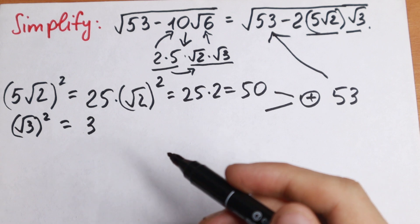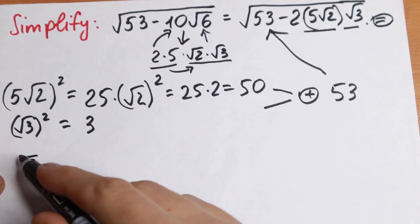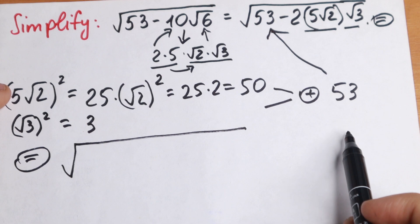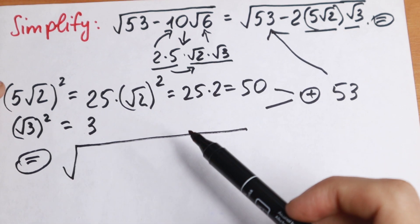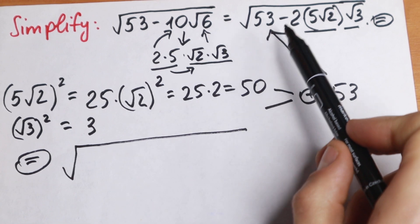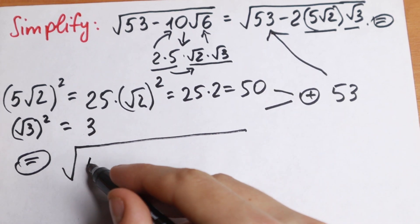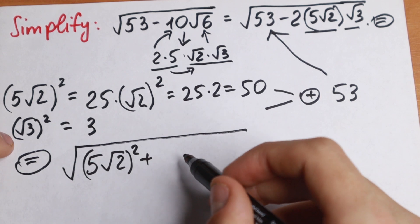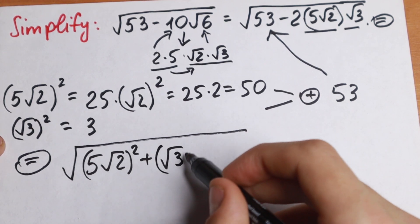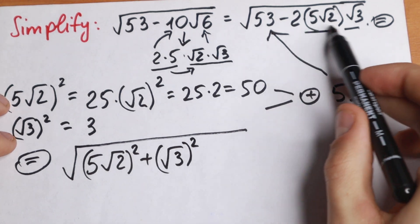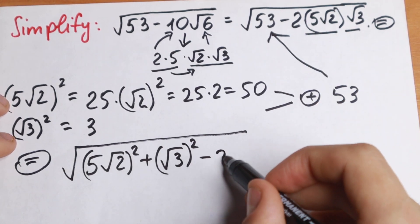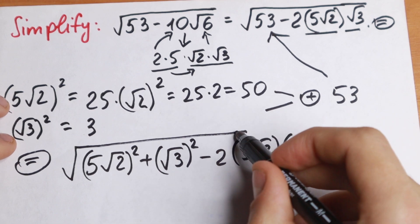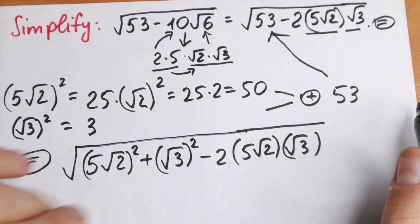So let's write this out. From here it will be equal to √ of: this 53 can be written as two squares — (5√2)² equals 50 and (√3)² equals 3, and together they give 53. So we replace 53 with (5√2)² plus (√3)², and at the end we subtract 2 times 5√2 times √3. As you can see, this is a really interesting expression.